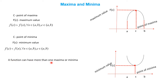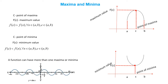A function can have more than one maxima or minima. In the previous cases we found only one maxima and one minimum, but consider the graph of y = sin x. Here there are multiple maxima and multiple minima. So a function can have more than one maxima or minima.